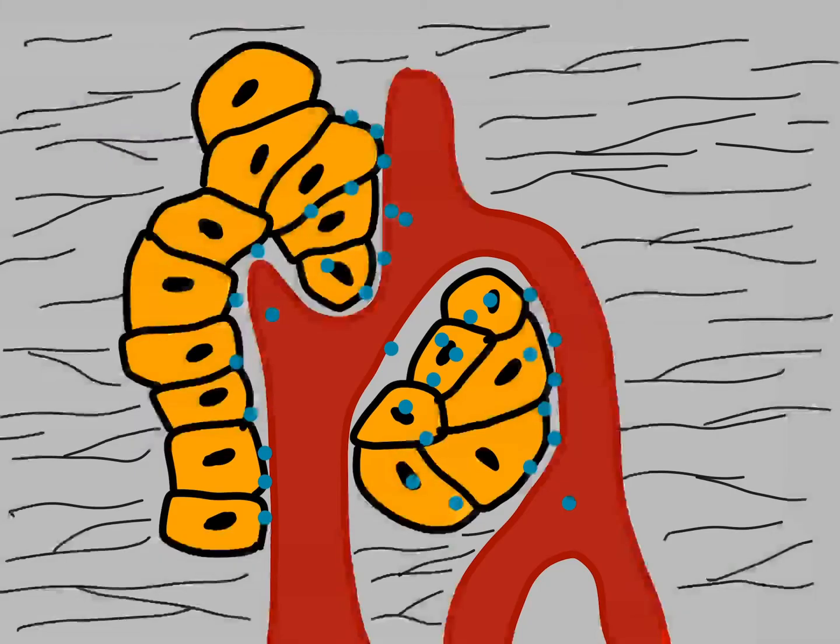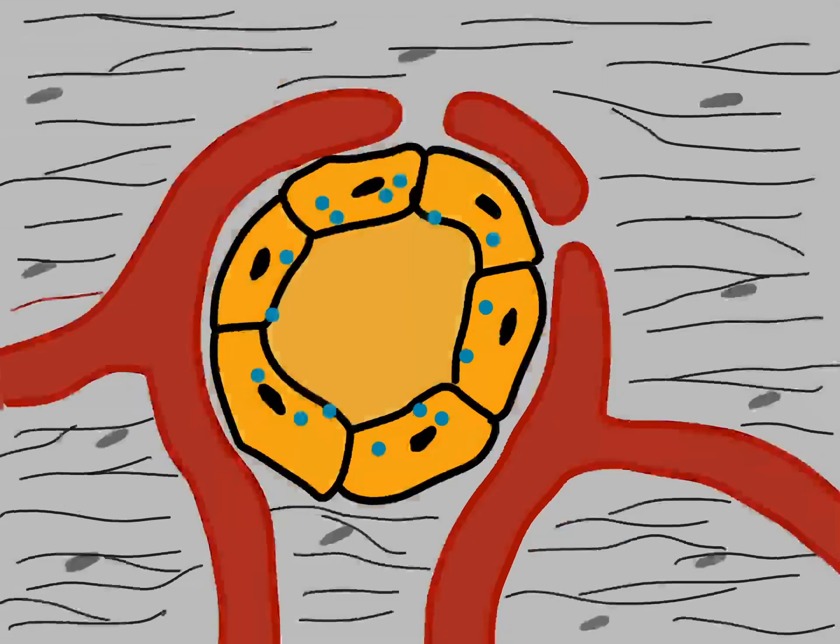Secretory cells are arranged either as irregular cords or as round follicles with a lumen for temporary storage of secretory products.